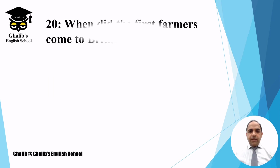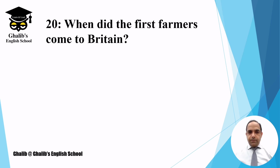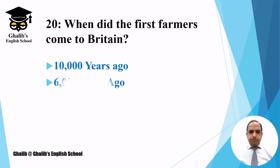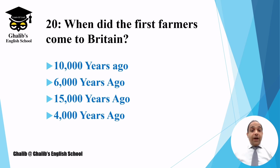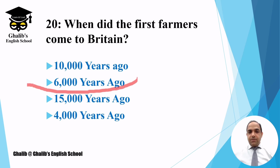Question number twenty: when did the first farmers come to Britain? The options are 10,000 years ago, 6,000 years ago, 15,000 years ago, or 4,000 years ago. The answer is 6,000 years ago.